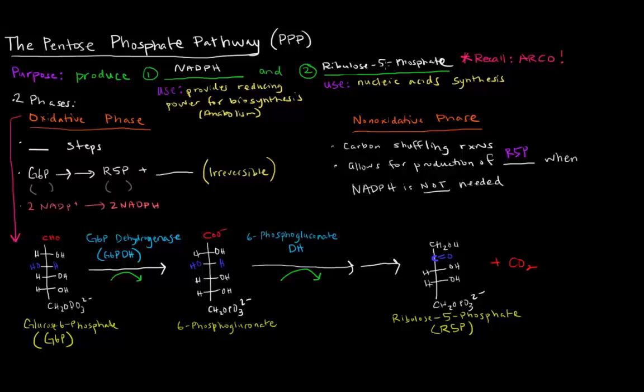The point of the non-oxidative phase is it allows for the production of ribulose 5-phosphate, or R5P, when we don't need NADPH. The pathway can create both of these, but if we only want to create ribulose 5-phosphate, then we want to go through the non-oxidative phase. However, if we want to create both of these different things, then we're going to have the oxidative phase take over.